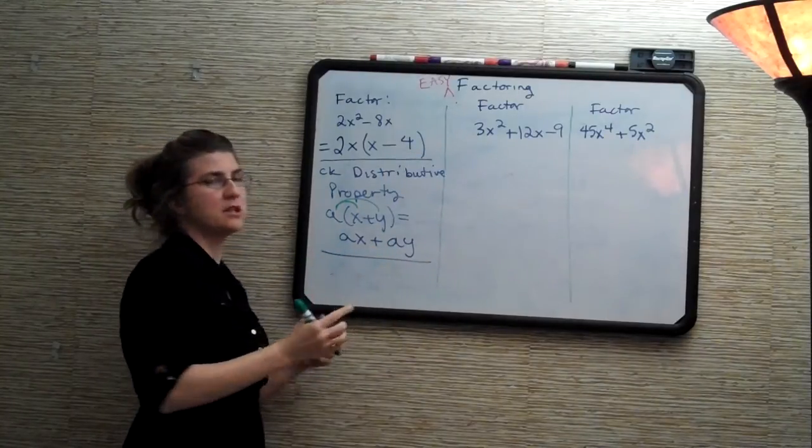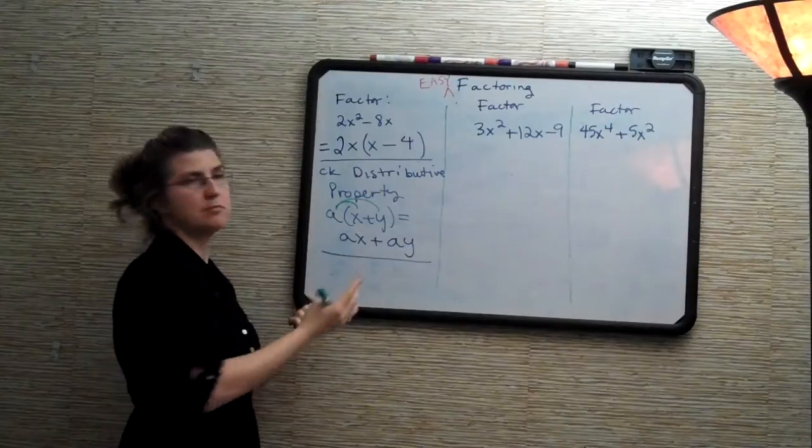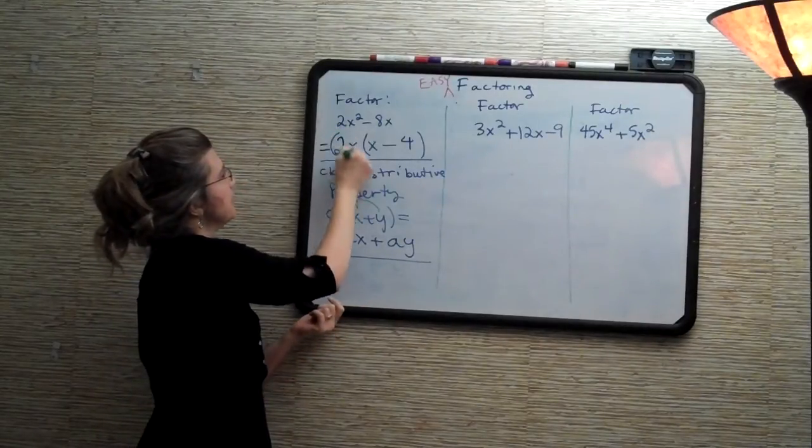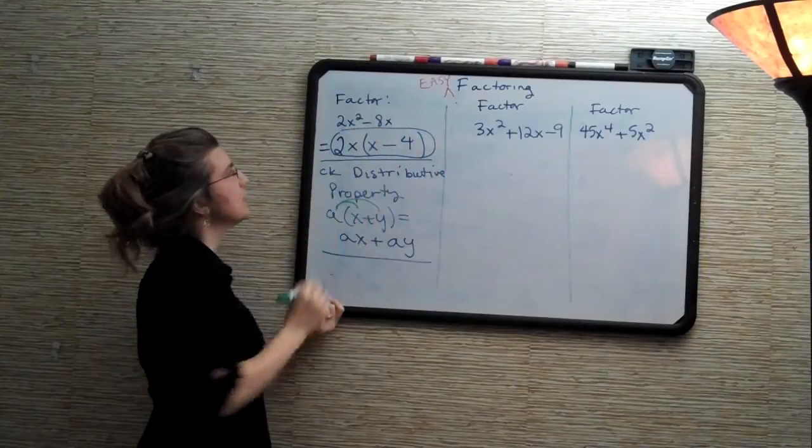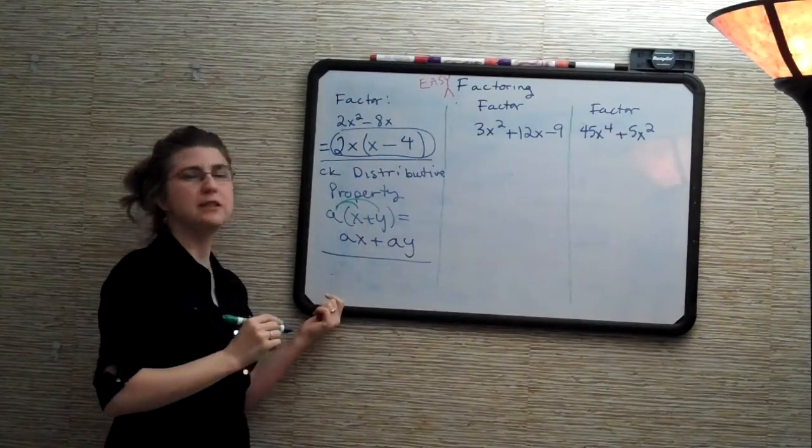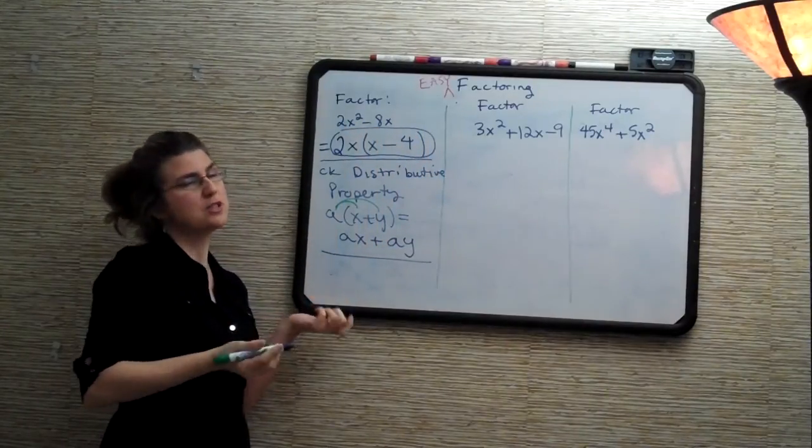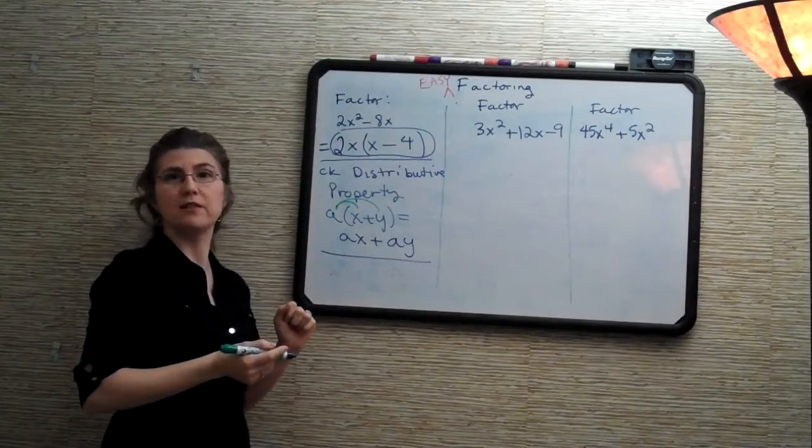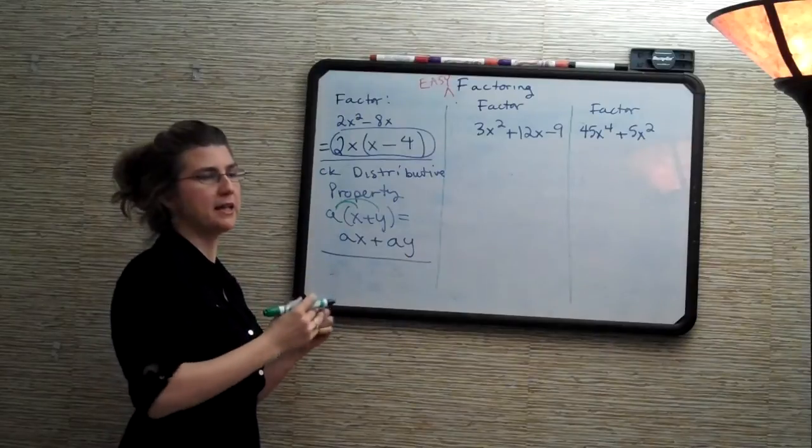Since the a could in theory be a negative number, we usually just put it with a plus sign. Alright, so this would be the factored form of 2x squared minus 8x. Do you see why I call it easy factoring? We are just pulling out the greatest common factor and then finding what that is multiplied by to give us our original.